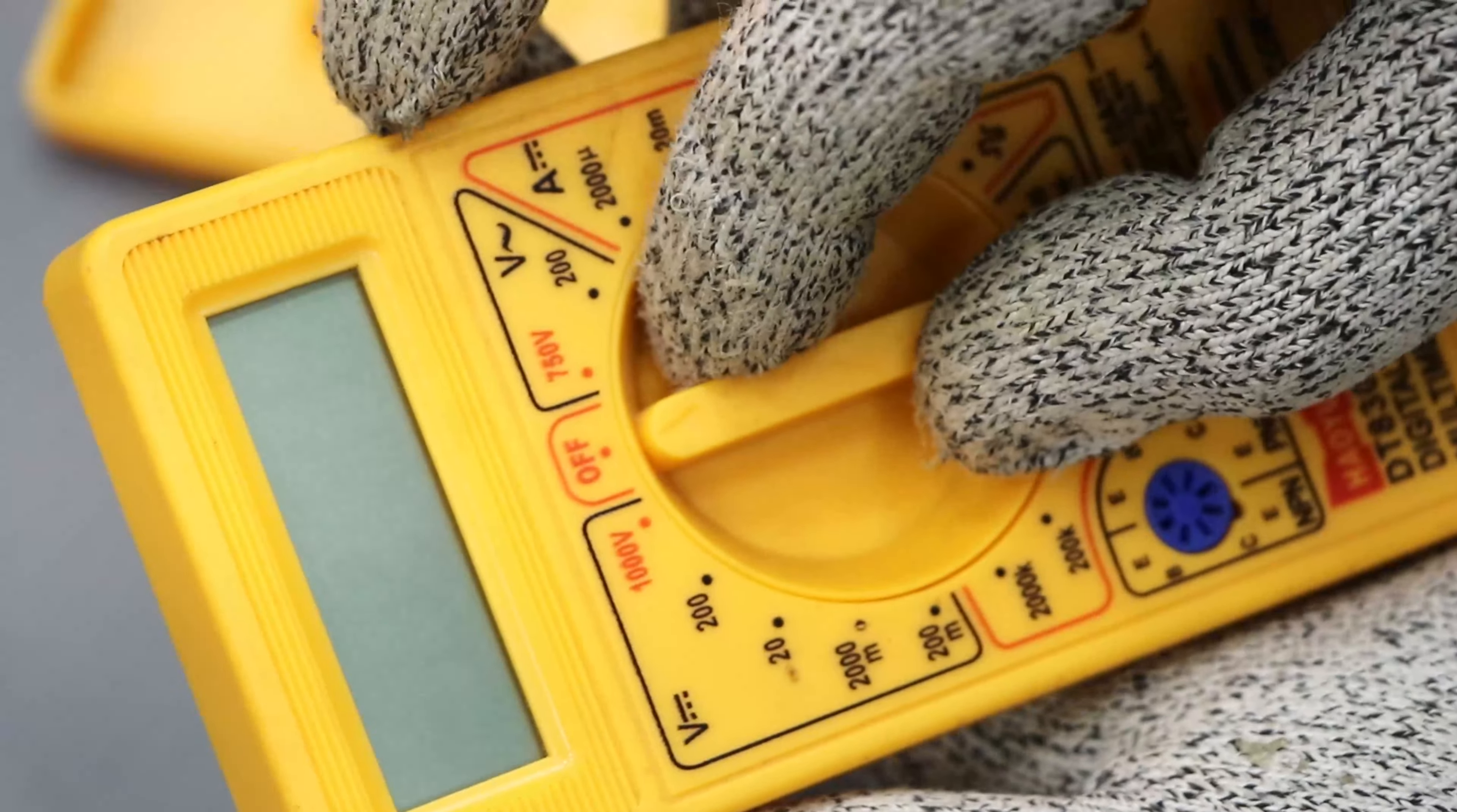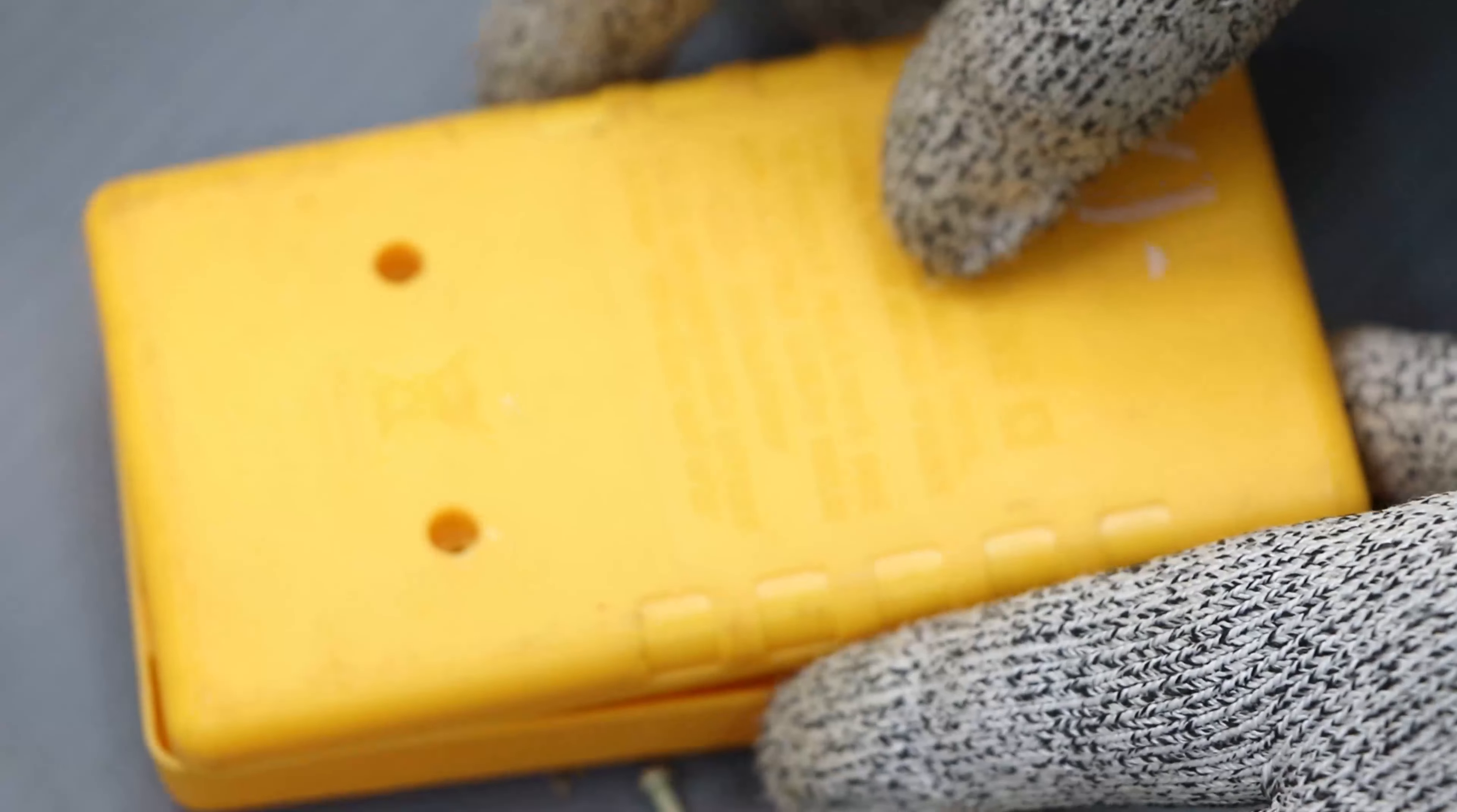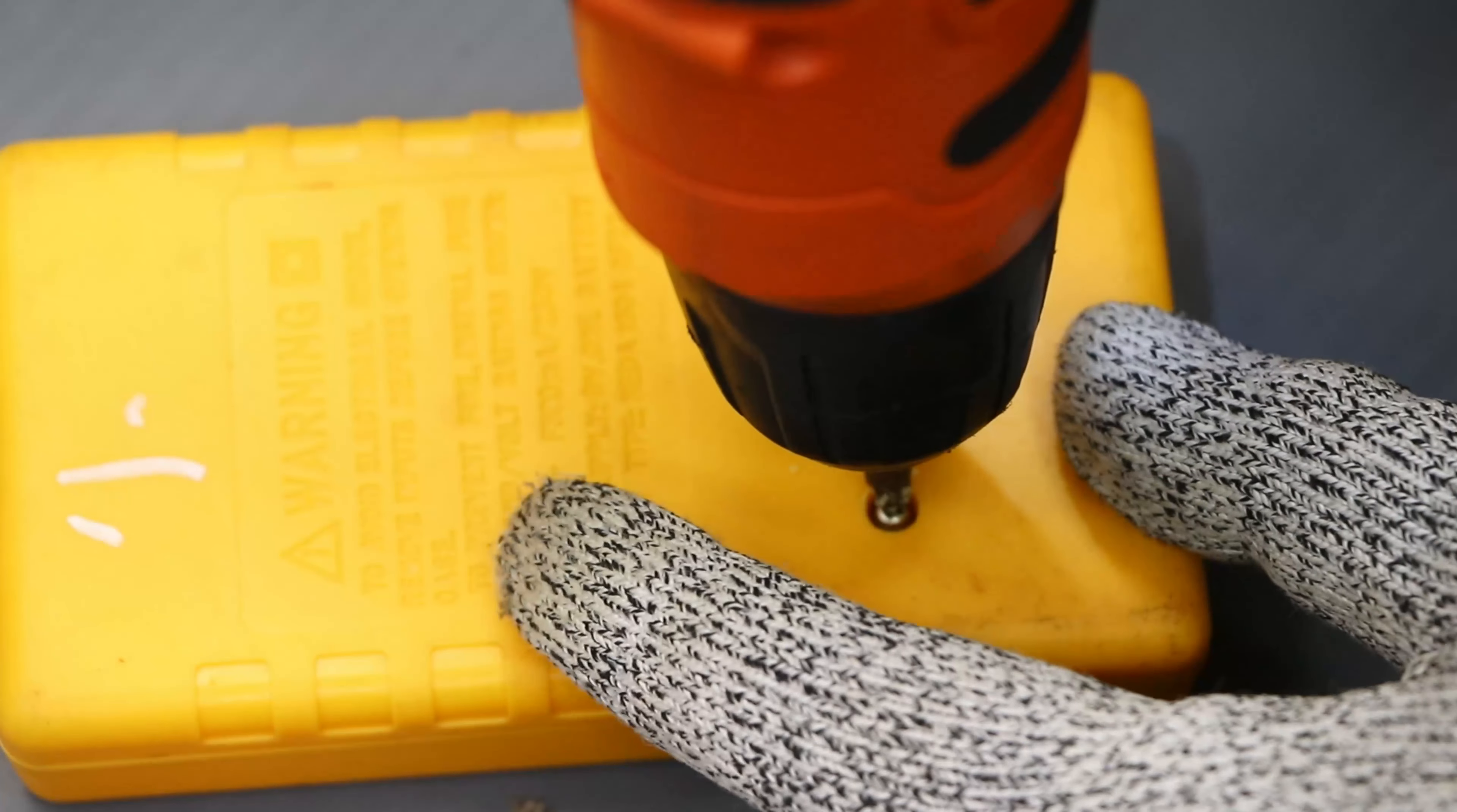Now you can see the power indication is shown in the multimeter. So it's time to close the back lid or the back cover. Now tighten the screws.